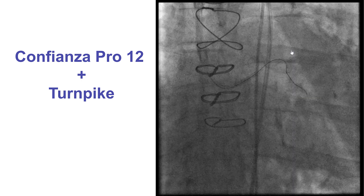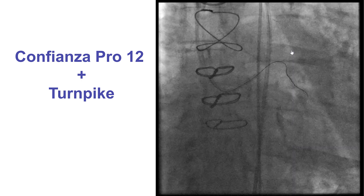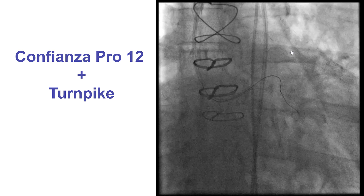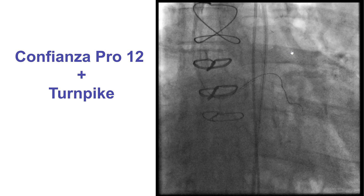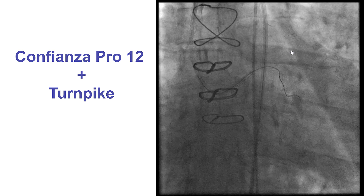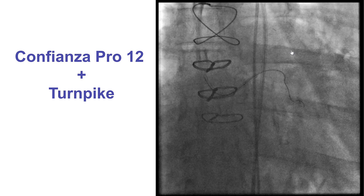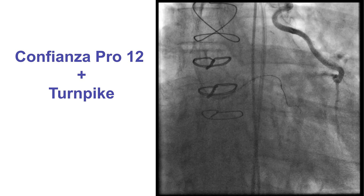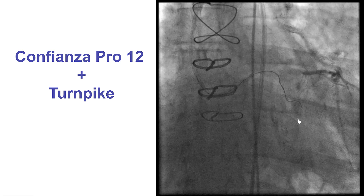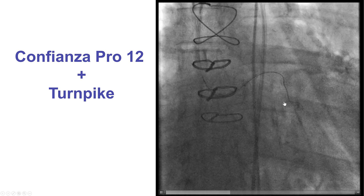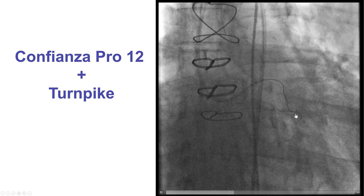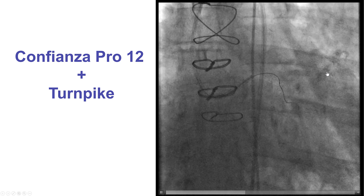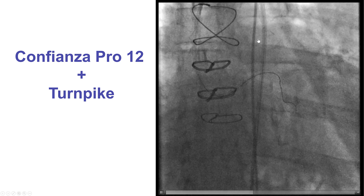Going through the left main and the circumflex was quite challenging and required multiple microcatheters and guide wires including Confianza Pro 12, Fielder XT, and Pilot 200. After multiple attempts, the wire finally advanced subintimally into the course of the circumflex, as shown by injection through the LIMA.